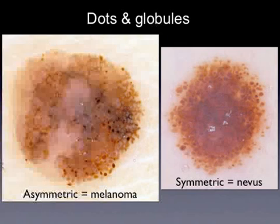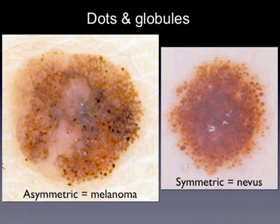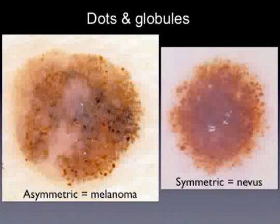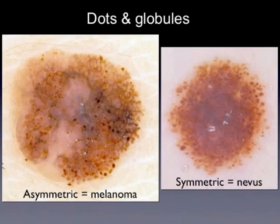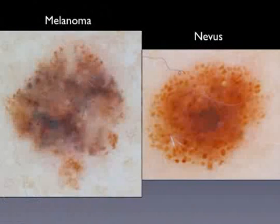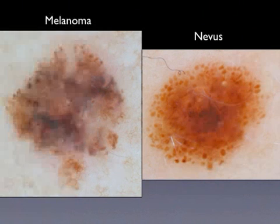Dots and globules can be found in nevi but also in melanoma. The differential diagnosis is facilitated by the assessment of the regular or irregular distribution of dots and globules within the lesion. Melanoma shows asymmetric collection of globules of different size and color, whereas globular nevi exhibit symmetric distribution of globules. Here are two examples of lesions showing peripheral globules distributed asymmetrically — melanoma — and symmetrically — nevus.